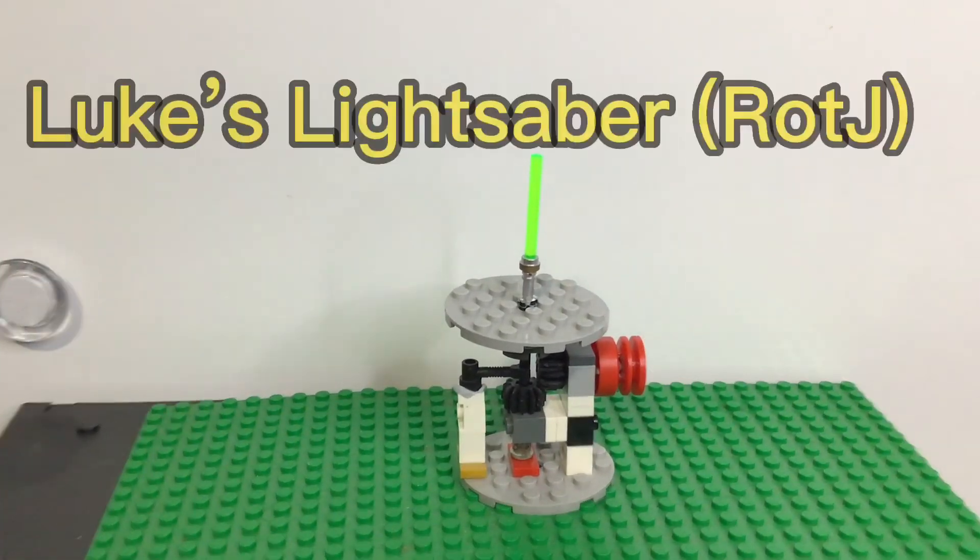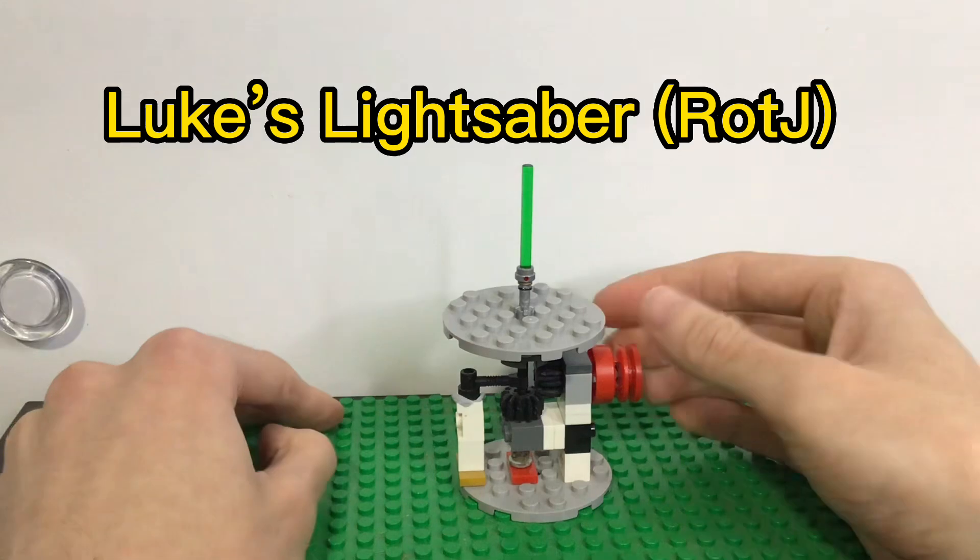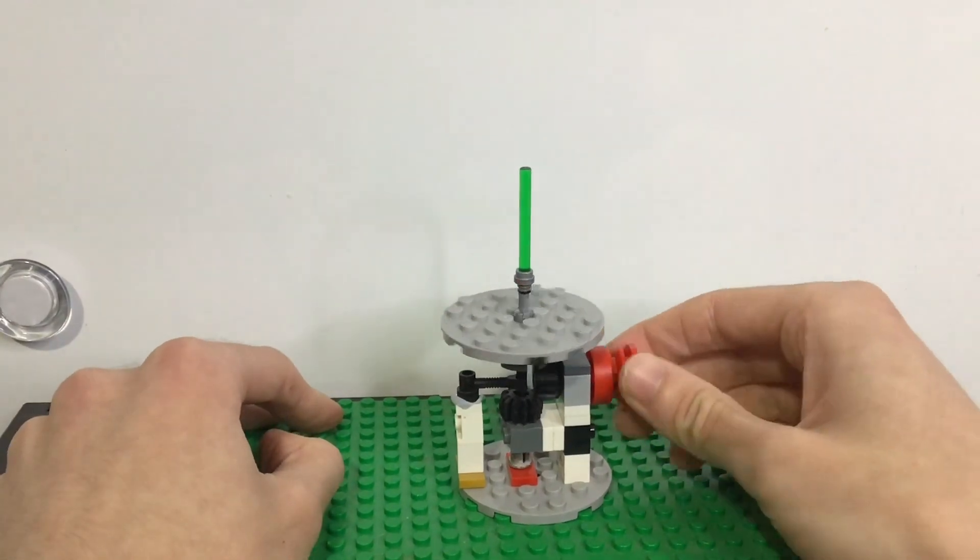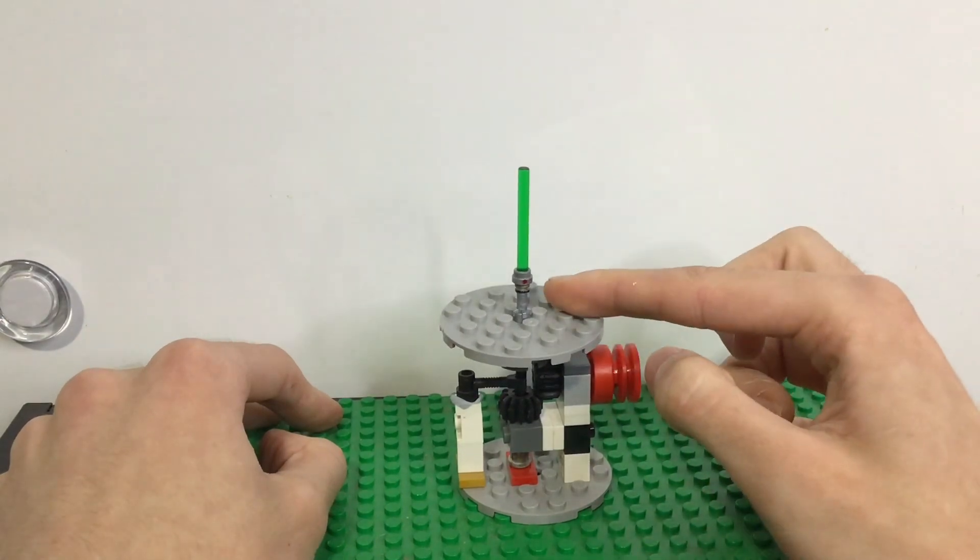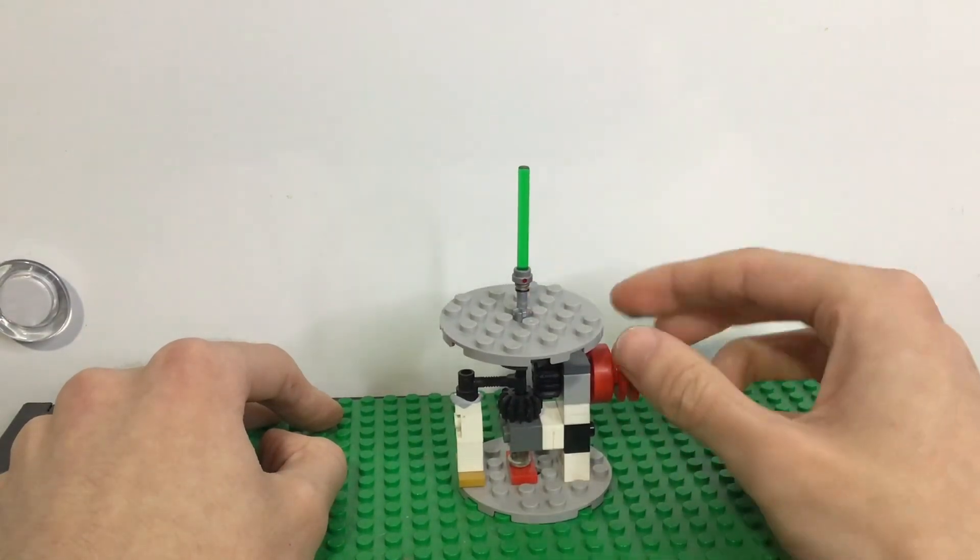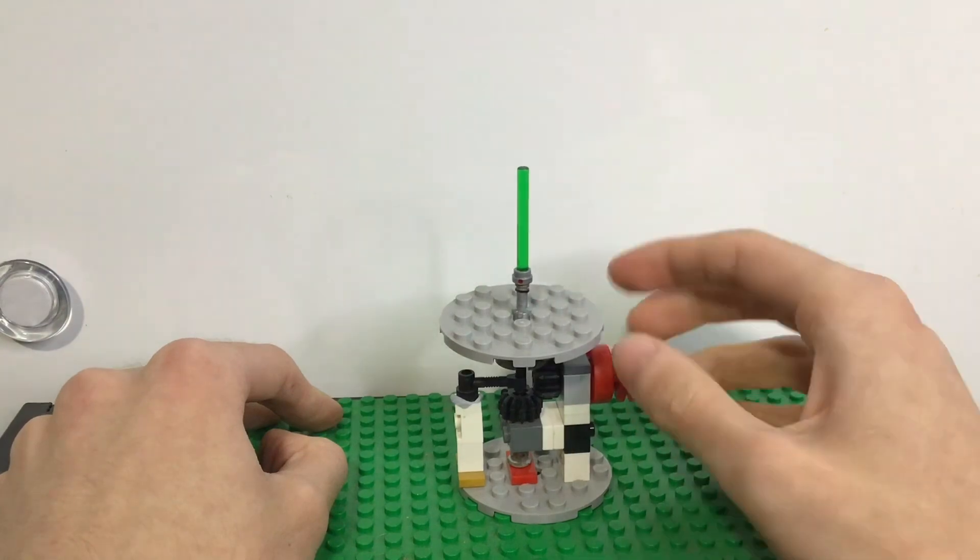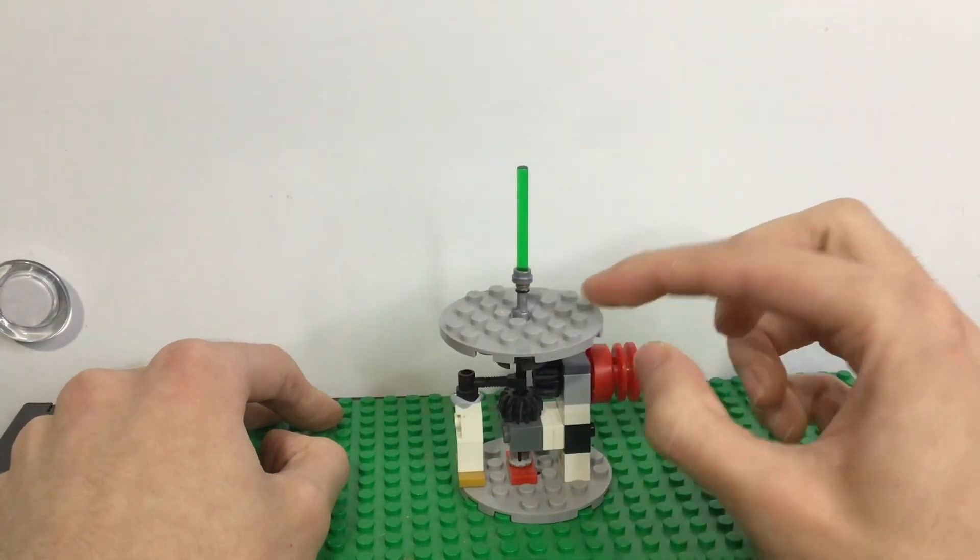Moving on, we have Luke's lightsaber from Return of the Jedi. It's the green one - we've got a black rim just below the blade, the second one below, and a red dot. That's pretty much it for Luke's lightsaber, but I think it looks great, really nice.